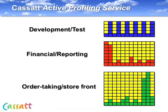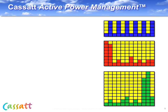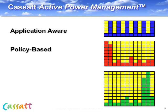One tool is Cassatt's Active Power Management, or APM. This software runs on a management server and is application-aware, so it understands how to gracefully shut down and start up software stacks and servers, and in what sequence, because it also understands application interdependencies. APM is driven by policies, which can be based on time, events, or facility requirements. The most sophisticated is demand-based policy, where the software actually monitors fluctuations in the demand for service and automatically powers servers on and off in response.